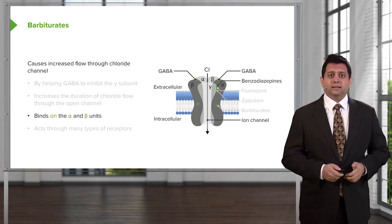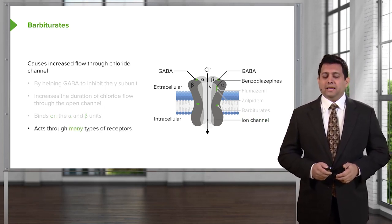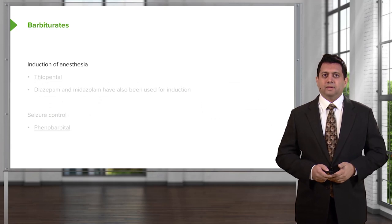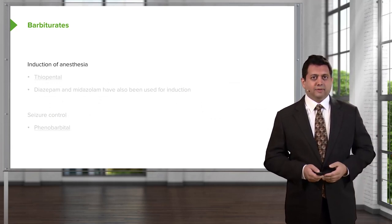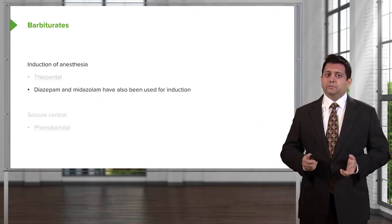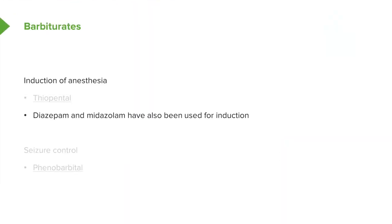Barbiturates are binding on both the alpha and the beta units, and through many types of receptors, it exerts many levels of sedation throughout the brain. We often use barbiturates for induction of anesthesia — thiopental is the prototypical drug and the one you should remember. In terms of benzodiazepines, we also use diazepam and midazolam for induction; I personally use lorazepam in the intensive care unit. Seizure control is excellent with the barbiturate phenobarbital, and we've used it many times for status epilepticus where we can't get control of patients — it's our go-to strong drug for seizure control.